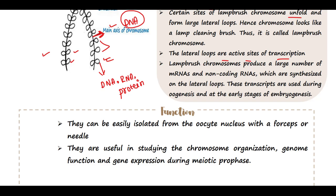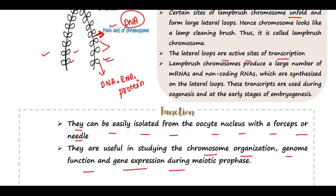Regarding their function, Lampbrush Chromosomes can be easily isolated from the oocyte nucleus with forceps or a needle. Since their size is very large, you can isolate them using just forceps and a needle. They are useful in studying chromosome organization, genome function, and gene expression during meiotic prophase.